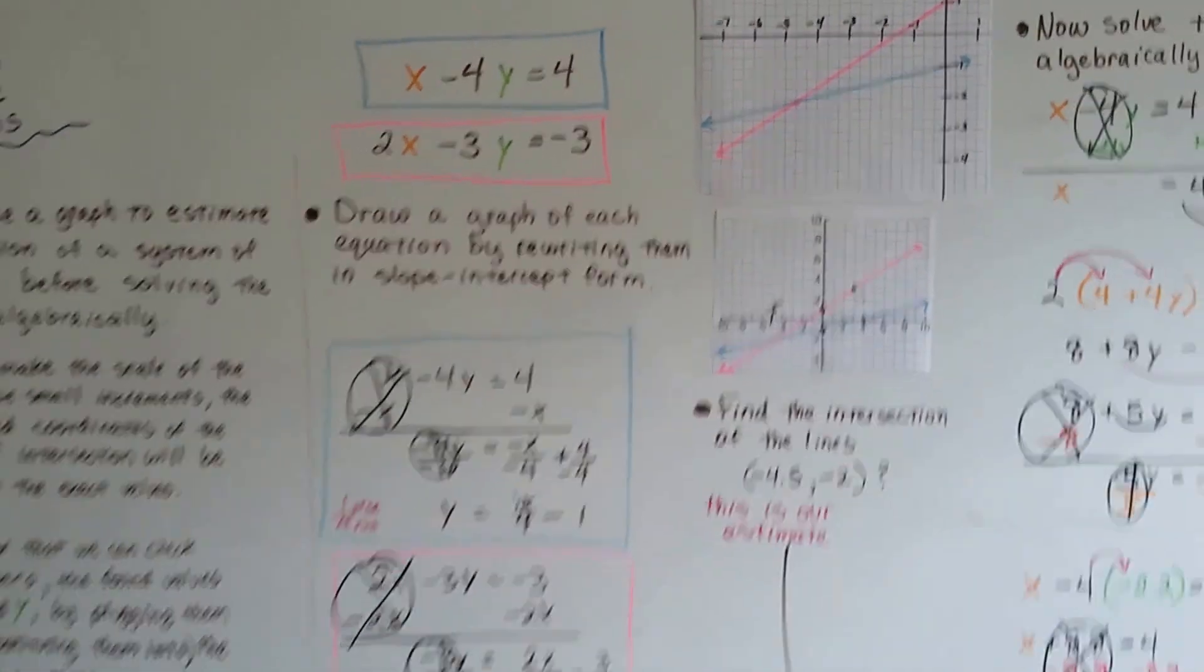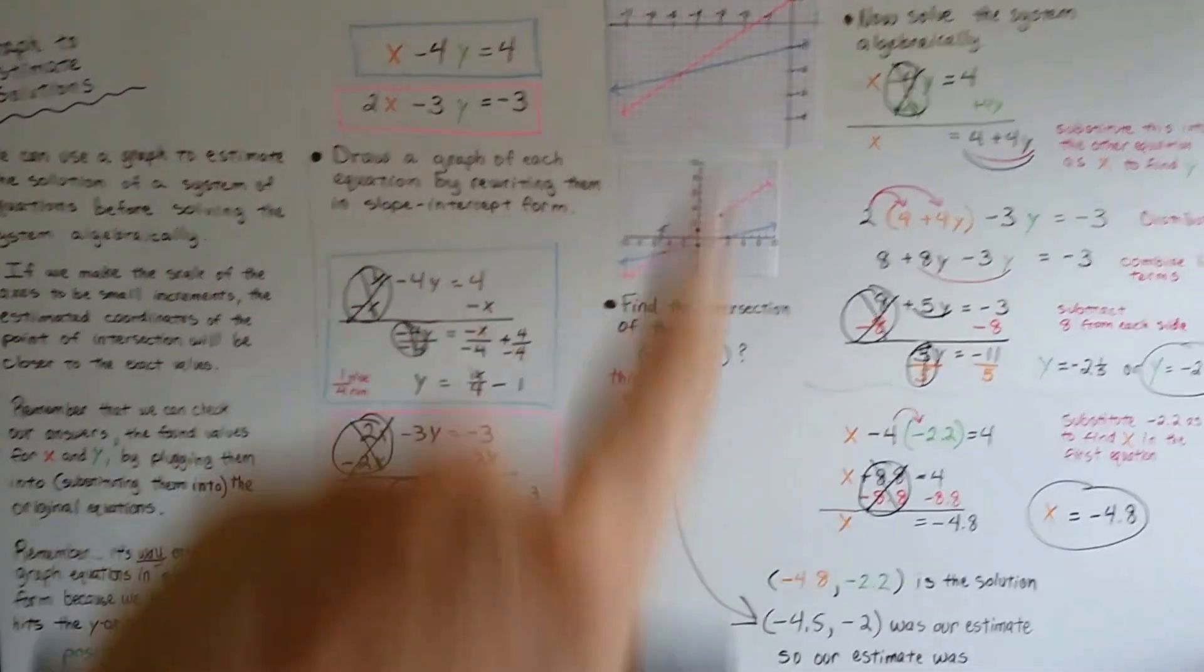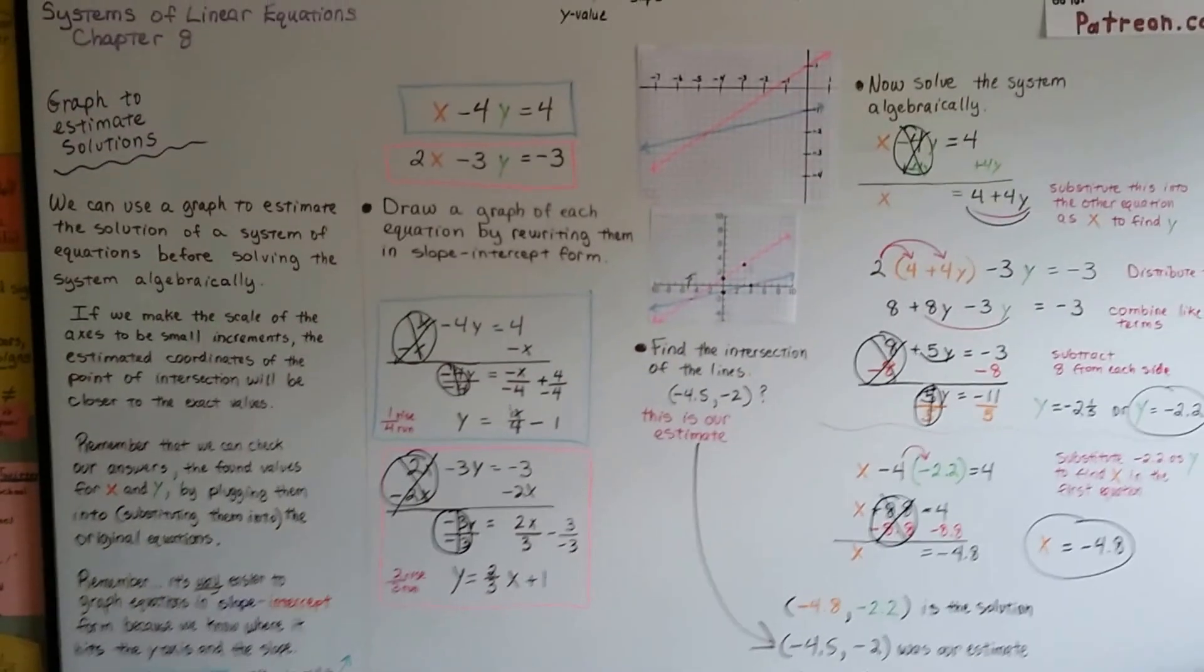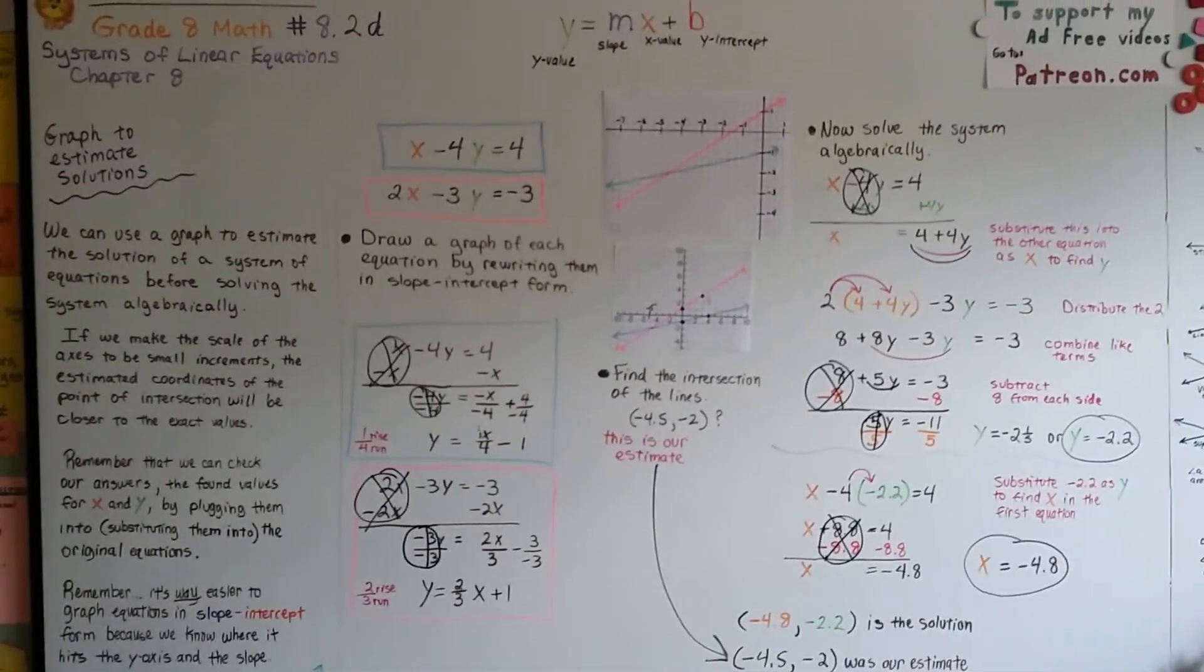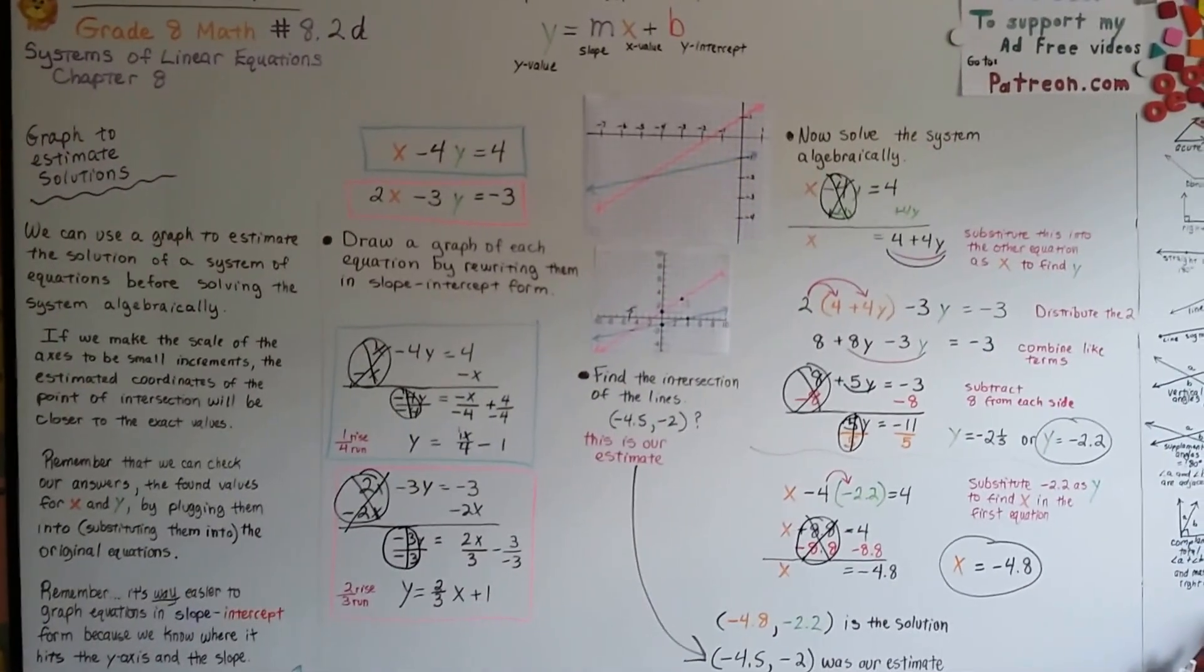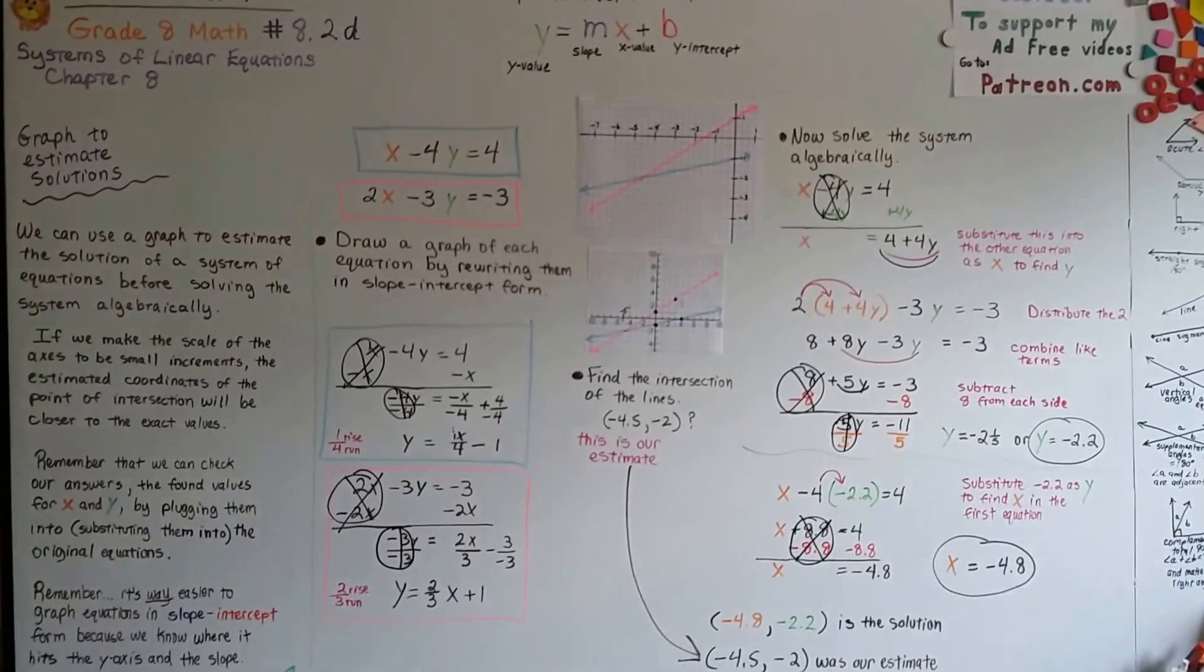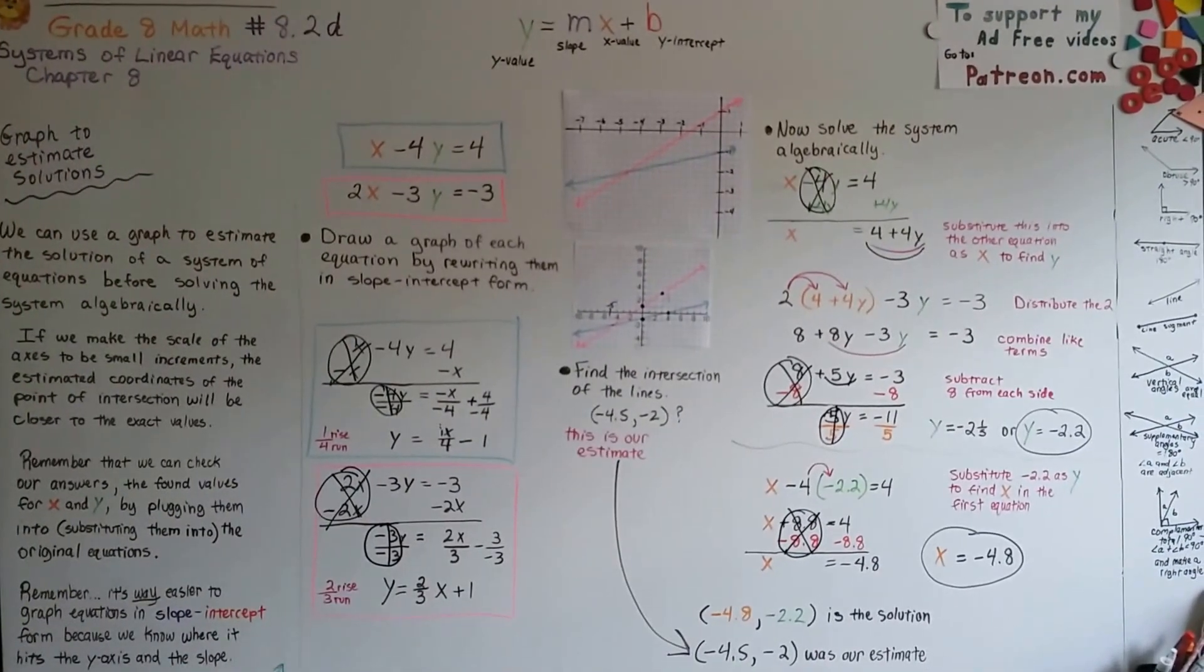That's how we graph to estimate solutions. Just remember you've got to put it in slope-intercept form before you graph it to make it easy on yourself. In 8.2e, our next video, we're going to do a word problem. I hope it will be helpful to you. We're slowly plugging through this 8th grade math and you're doing great. Keep it up. Keep following. I'll see you next video. Bye.